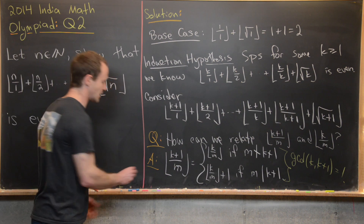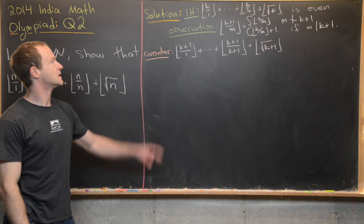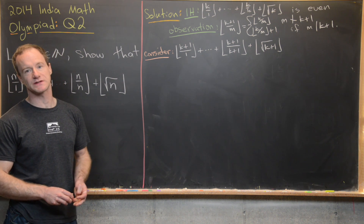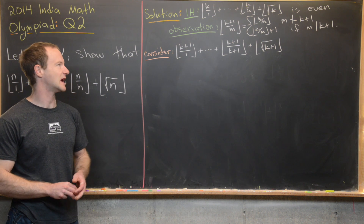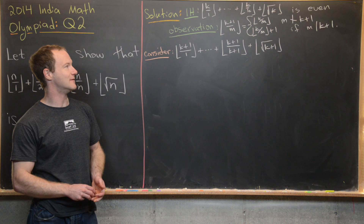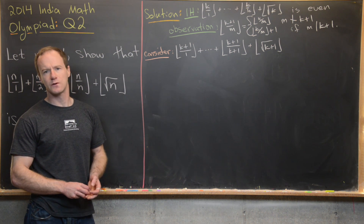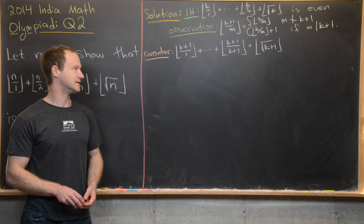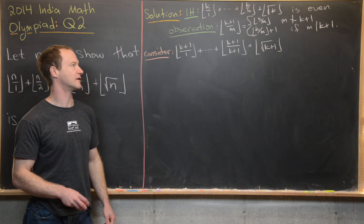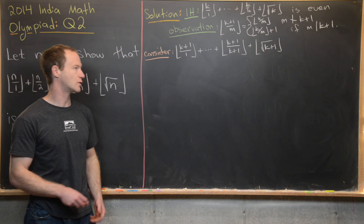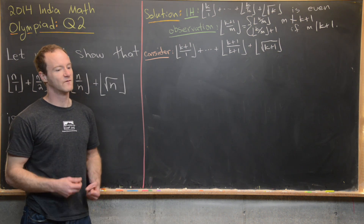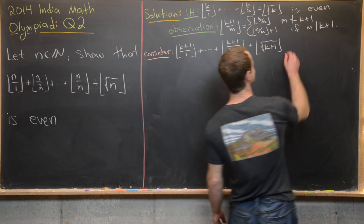Picking back up with this observation, we also need to consider floor(sqrt(k+1)) versus floor(sqrt(k)). That's: floor(sqrt(k+1)) = floor(sqrt(k)) if k+1 is not a perfect square, and floor(sqrt(k)) + 1 if k+1 is a perfect square.